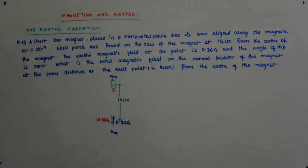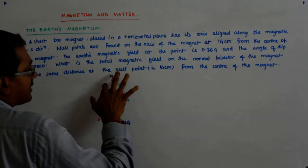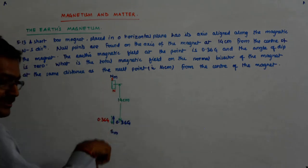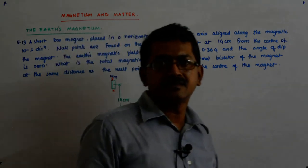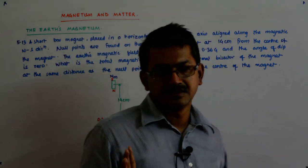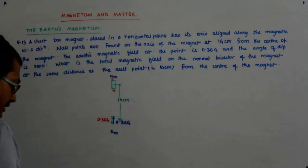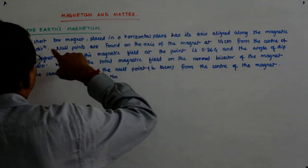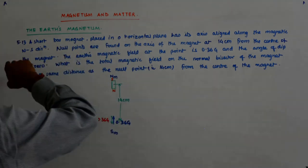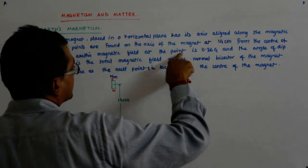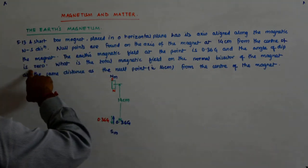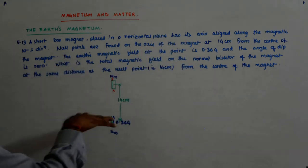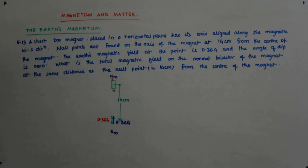Now what does that mean? It means simply that its magnetic moment is so much that at a point at a distance 14 centimeter away, its magnetic field is 0.36 Gauss. The null points are found at 14 centimeters from the center of the magnet. The earth's magnetic field at the point is 0.36 Gauss and the angle of dip is zero. All this translates into only this.